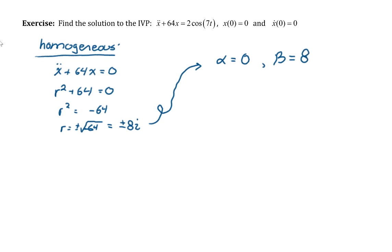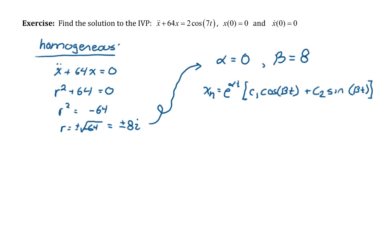Recall that when we have a purely complex solution to our characteristic equation, our homogeneous solution x_h will be of the form e^(αt)[c₁ cos(βt) + c₂ sin(βt)]. Since our real part α is 0, e^(αt) becomes just 1, so our homogeneous solution is c₁ cos(8t) + c₂ sin(8t).